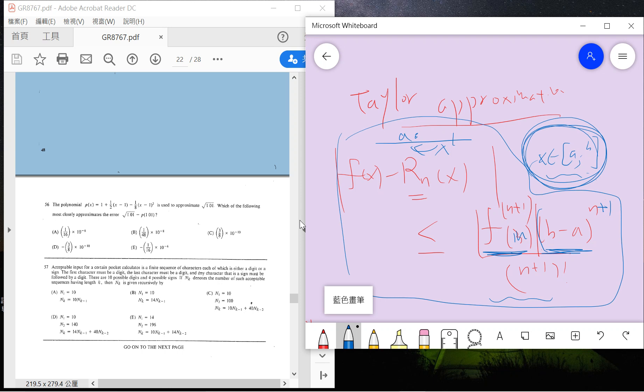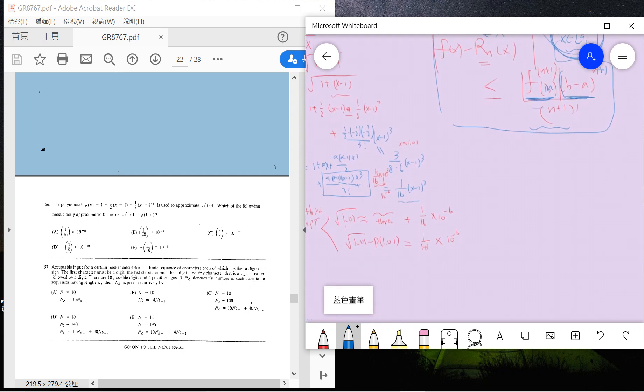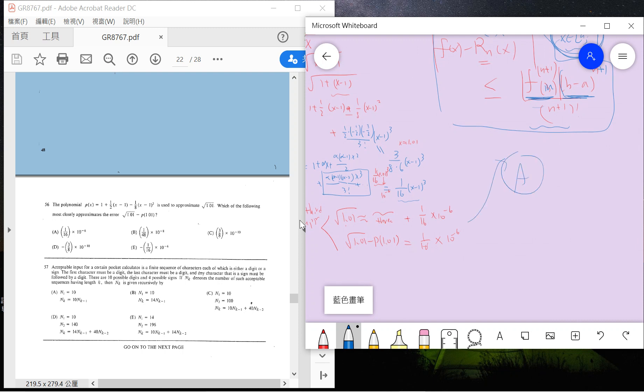Basically we need to find the nth power, the n+1 derivatives maximum, and times the interval power, the length of interval power divided by (n+1) factorial. So the answer is A. If you use this formula, then you will leave the same term for us.